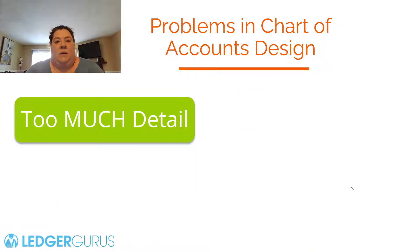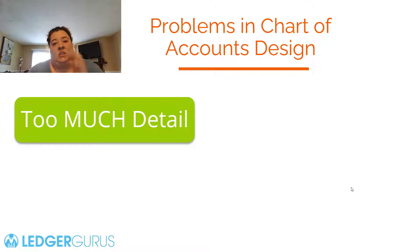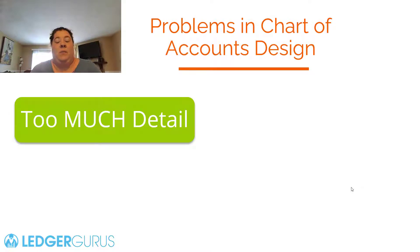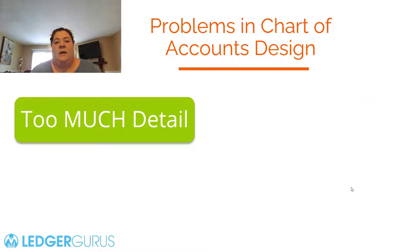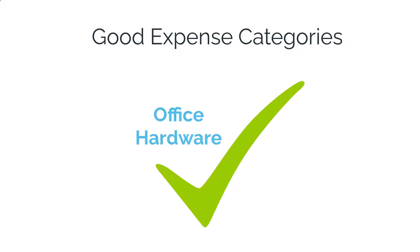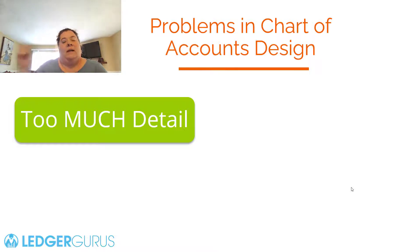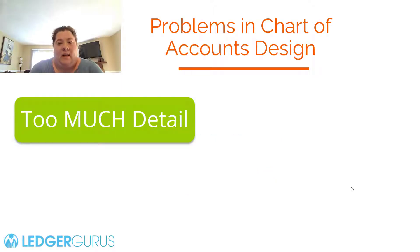A couple of problems we see people run into when creating their chart of accounts: first is too much detail. The way you create your chart of accounts determines how readable your financial statements are. If you have really long financial statements with everything divided into a million teeny little subcategories, it becomes very hard to read. Also, your expense categories should not be created for individual transactions — you should never have a category like 'Mary's new computer' or 'printer for the office.' Instead, have a major category called 'office hardware.' You can always click on the amount on your financial statements and they'll open a report showing all the transactions that make up that number, so you don't need that level of detail in your accounts.